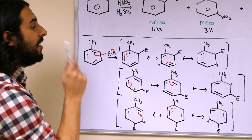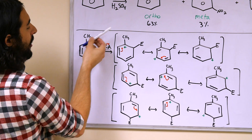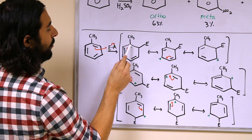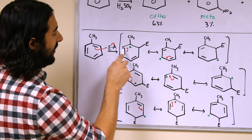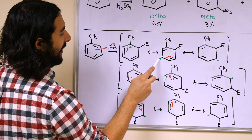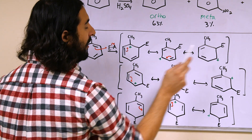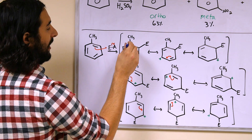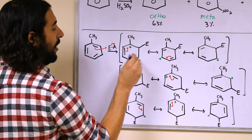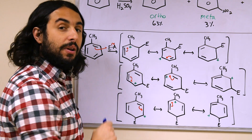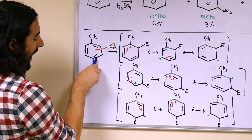If this pi bond interacts with the electrophile, we're left with a carbocation — the arenium ion. We can draw two resonance structures: the cation can be here, here, or here. Those are the three locations where the cation can be in these resonance structures. With para substitution it's the same — if this pi bond reacts, we have the electrophile here and the carbocation in three analogous positions.